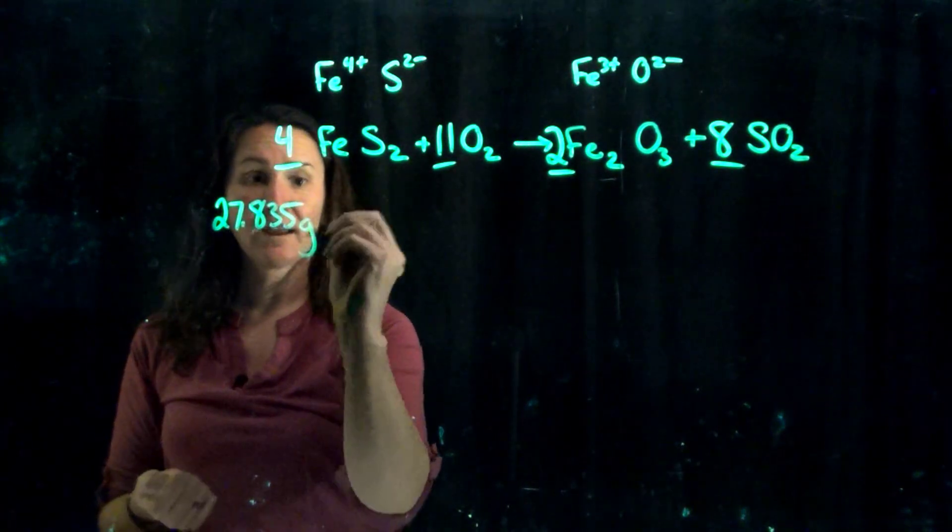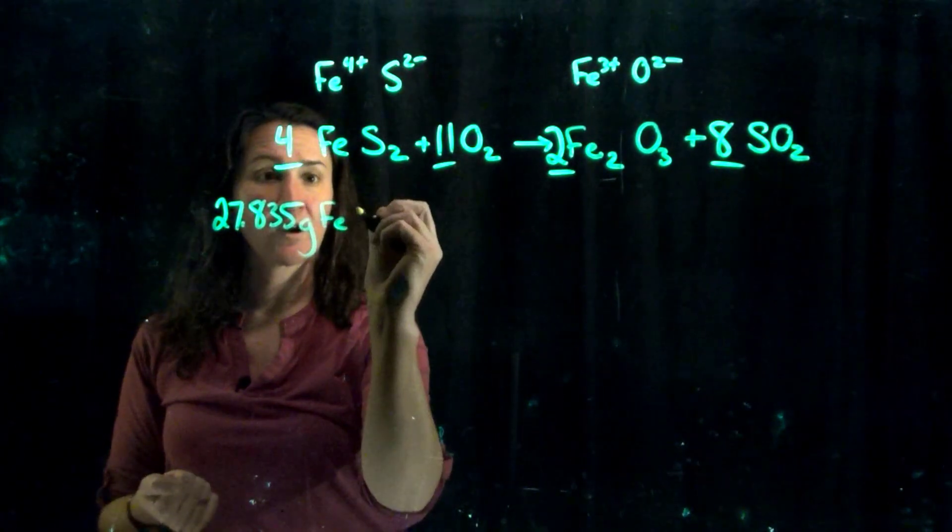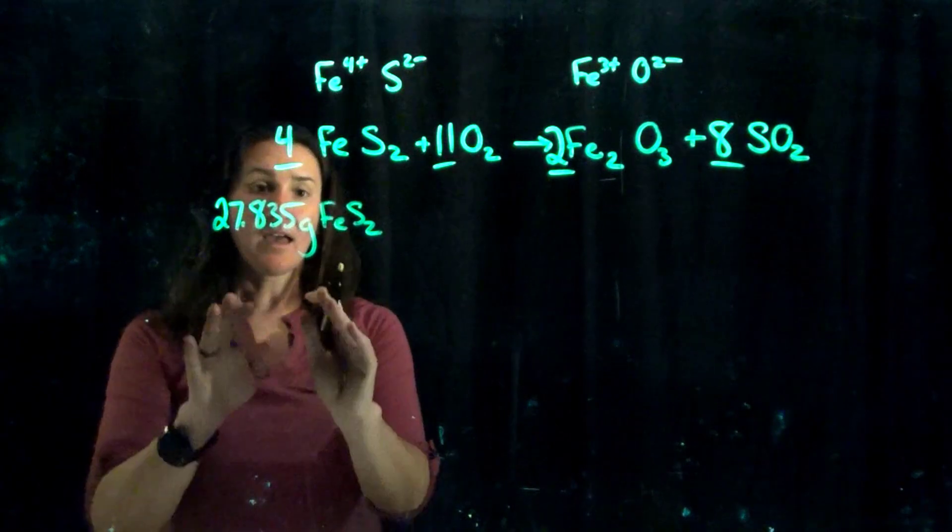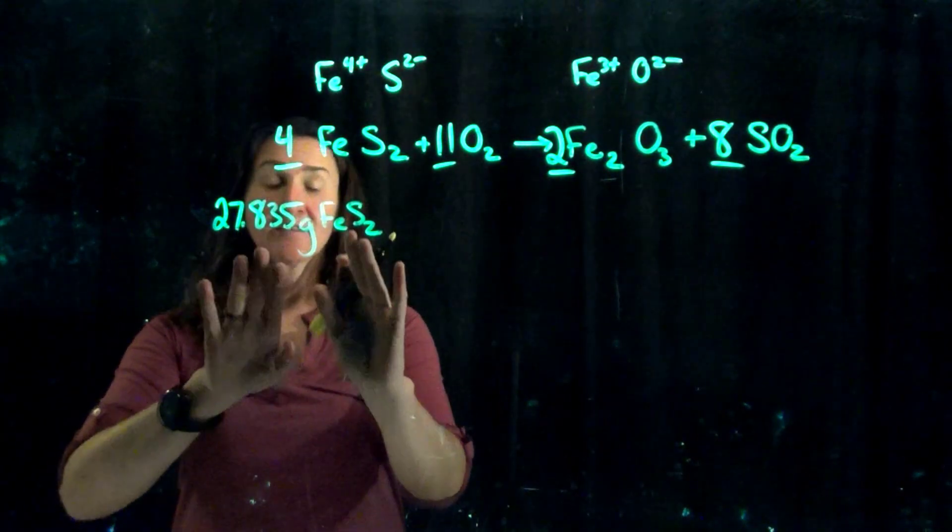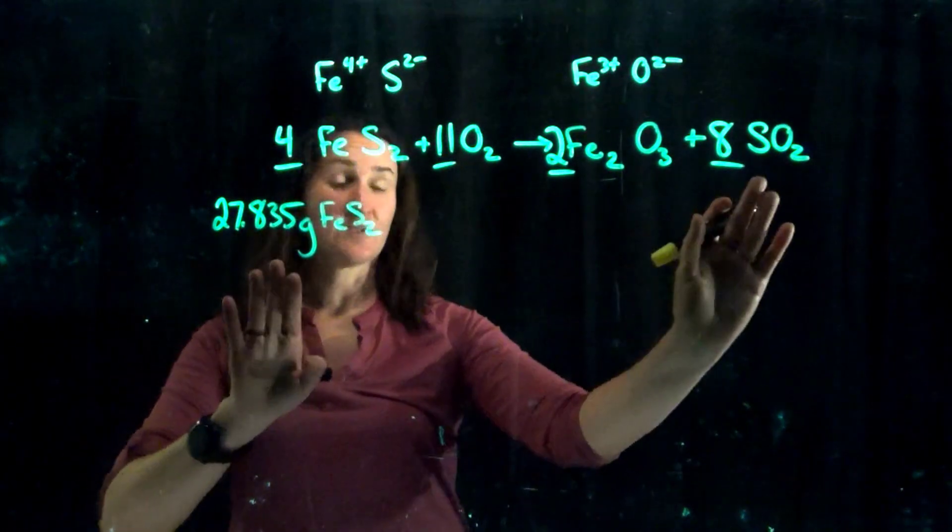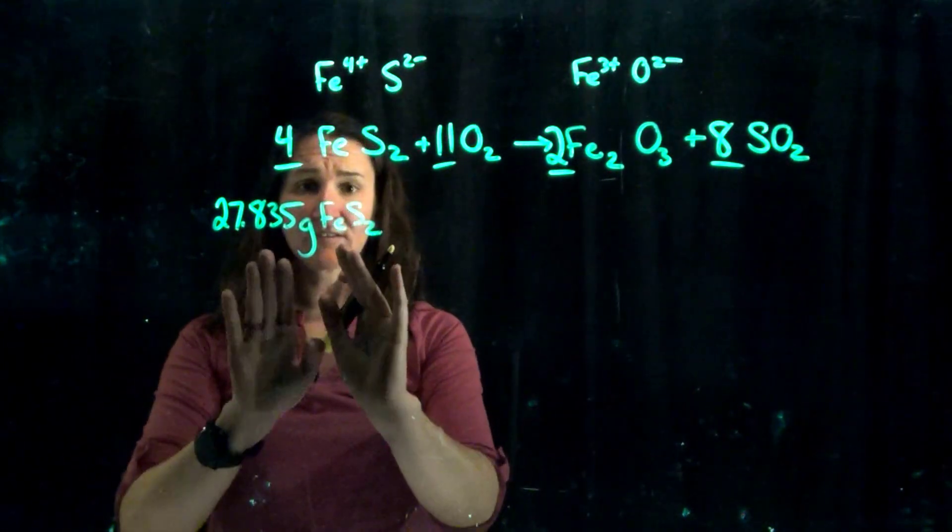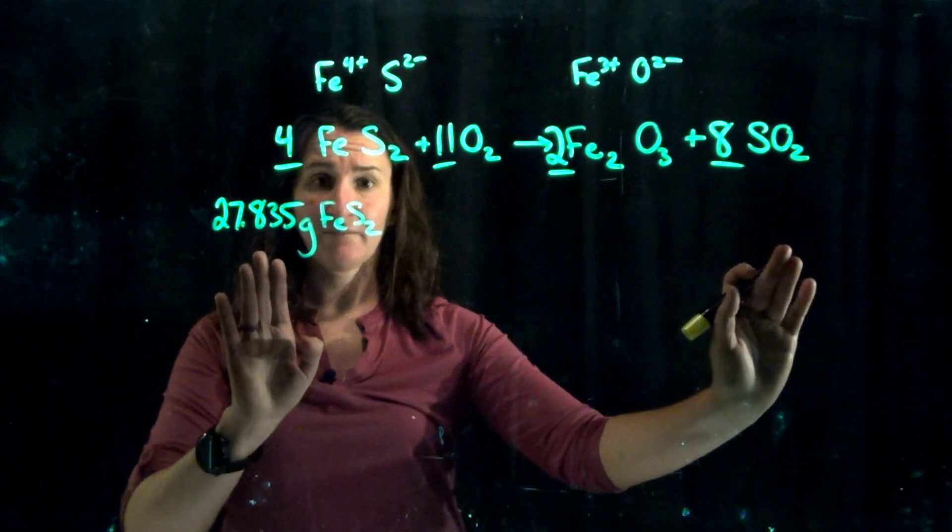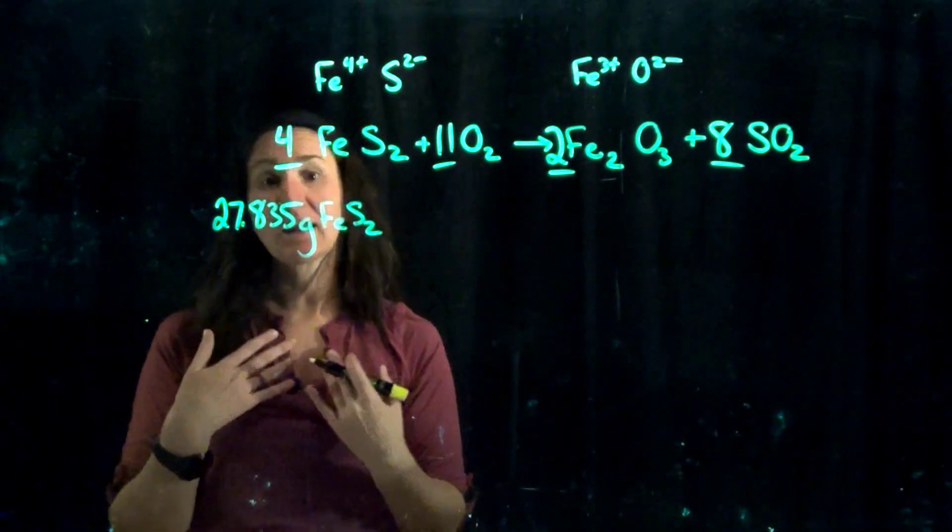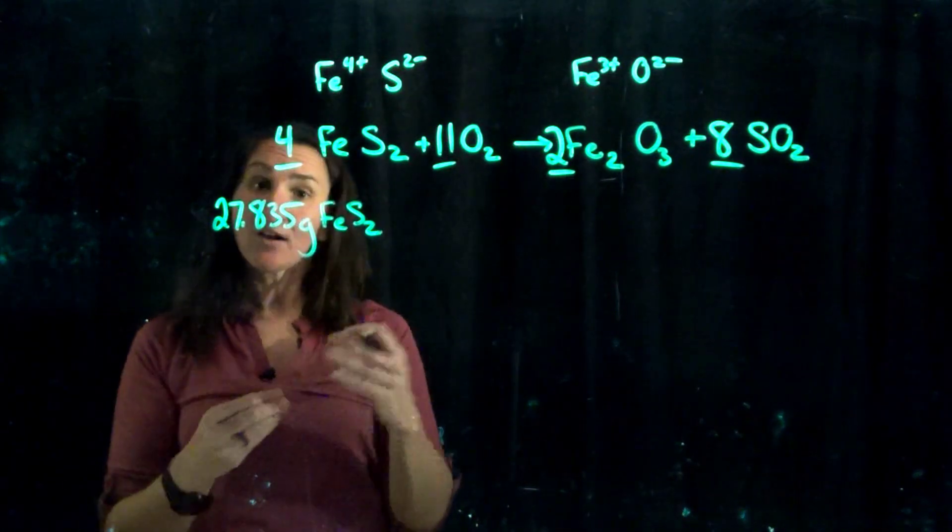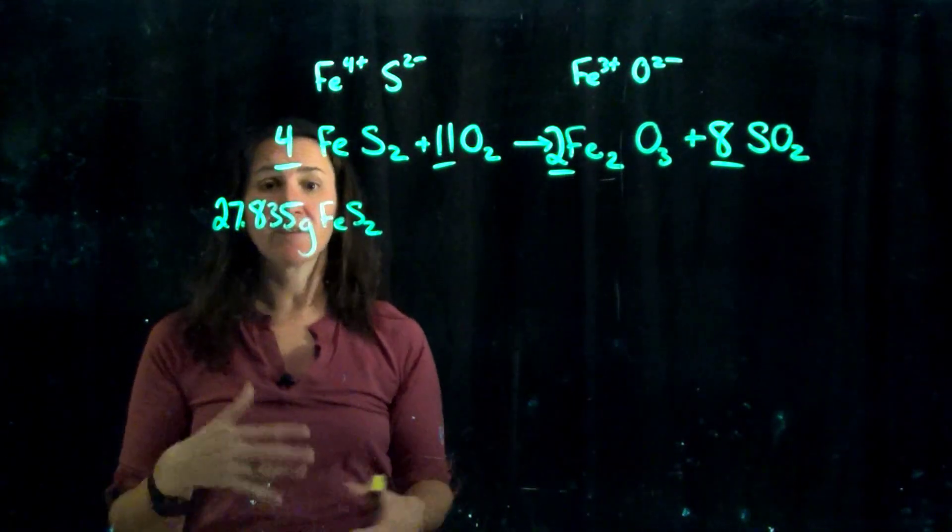In this case we're starting out with 27.835 grams of iron for sulfide, and then we're also starting out with an amount of oxygen. We'll start out with this one first. Since the question is asking me about sulfur dioxide, I'm just going to convert these grams all the way over to grams of sulfur dioxide, and then I'll compare how many grams of sulfur dioxide can be produced from oxygen.